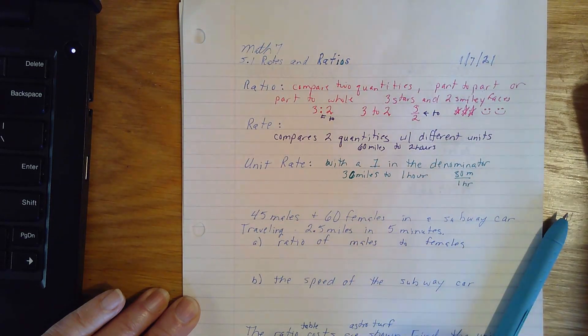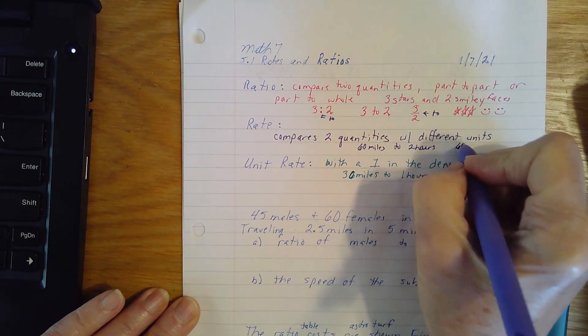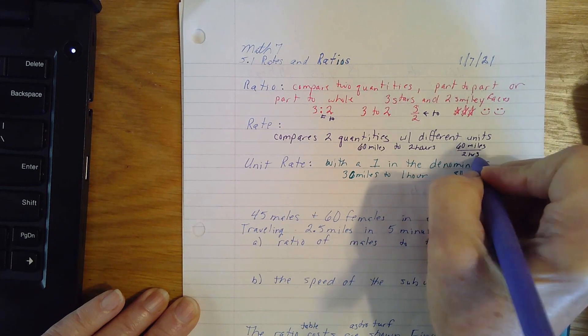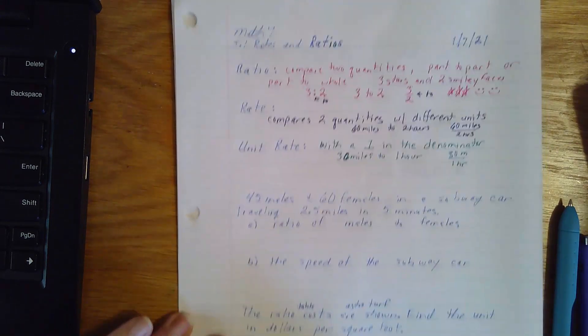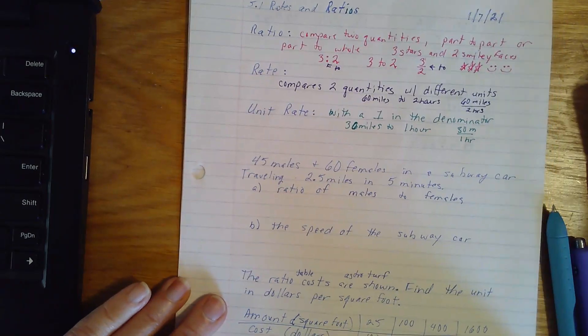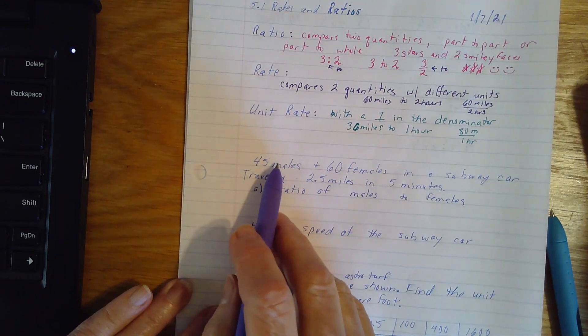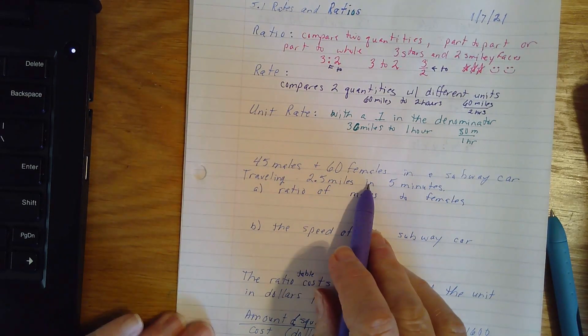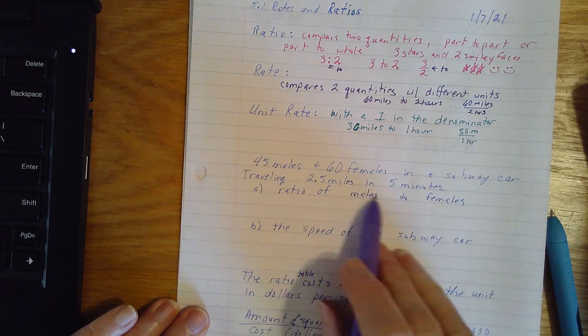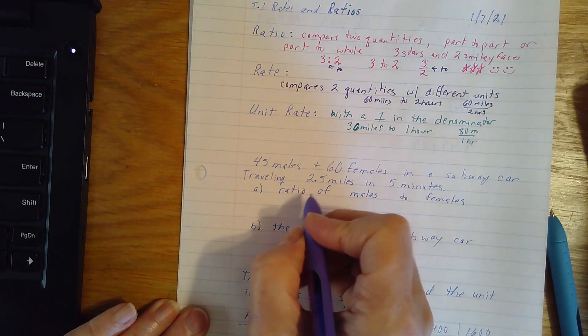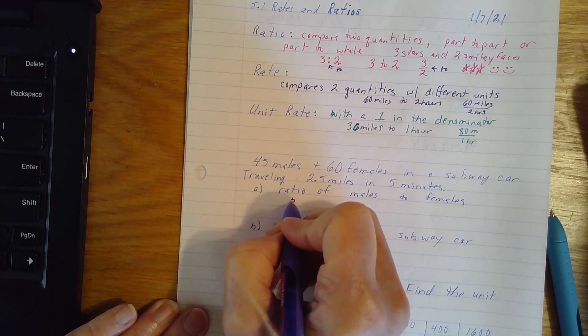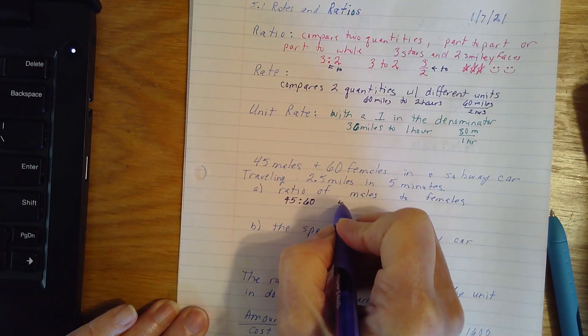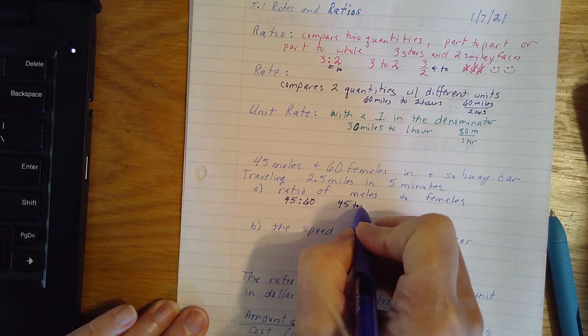We could write this one as 60 miles in 2 hours. So as we move on, let's go ahead and put these in action. We've got 45 males and 60 females on a subway car. The subway car is traveling two and a half miles in five minutes. The ratio of males to females. We're going to write it three different ways. It's 45 to 60. It is 45 to 60.